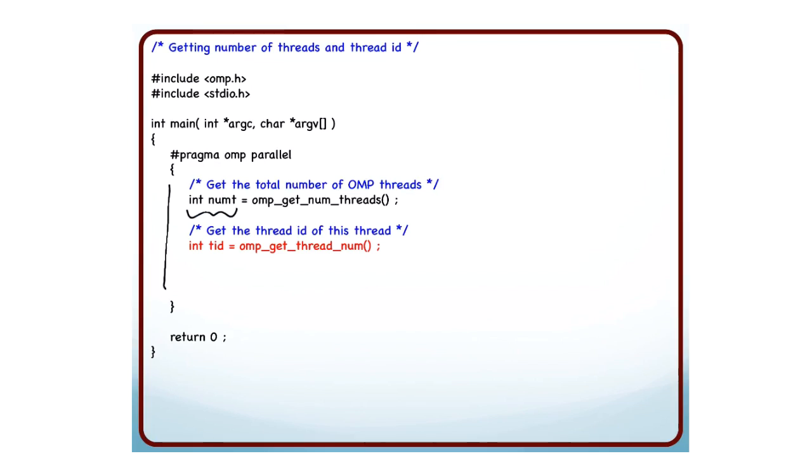So what about these variables numt and tid, where are these? These are going to be in the stack of each thread. This is like the first frame on the stack of each thread. Since these are declared and defined inside the parallel region, they will go on the stack. The important part is that each thread will have its own copy of numt and tid. What do I do next? I just print hello world along with the thread ID and the number of threads.